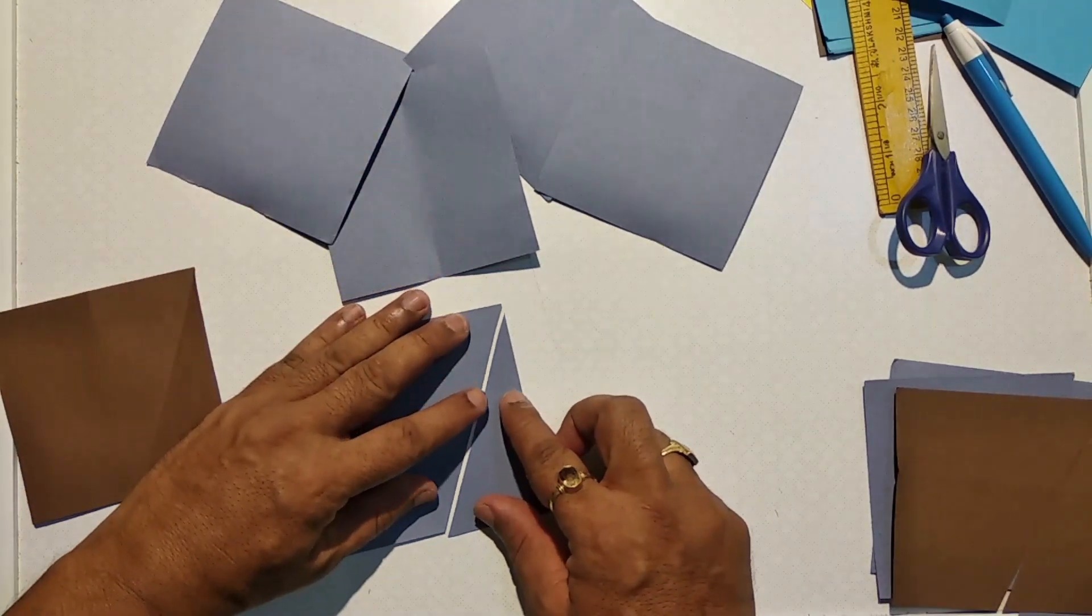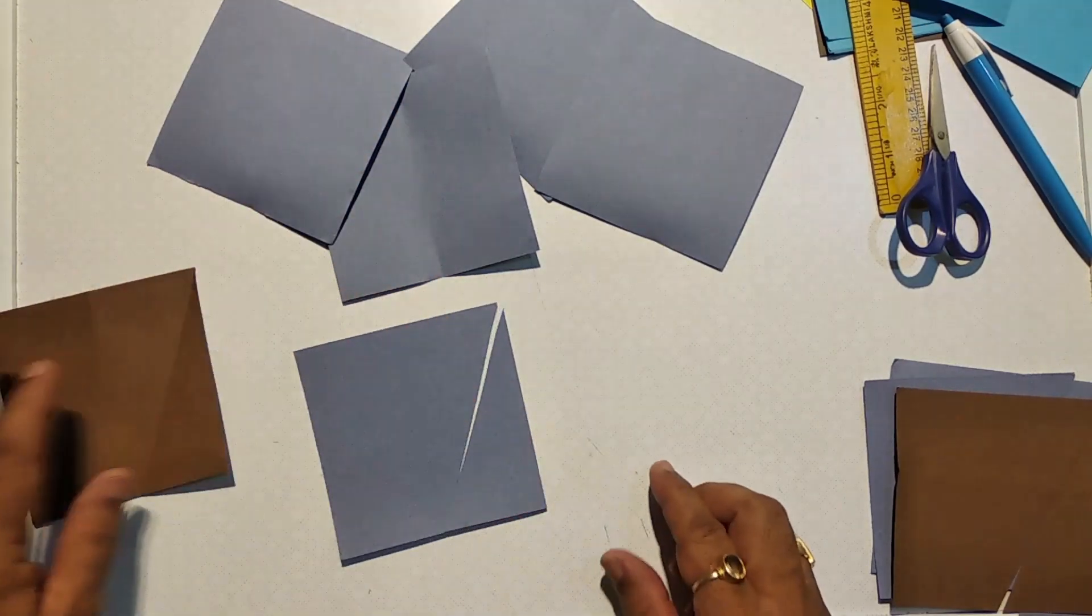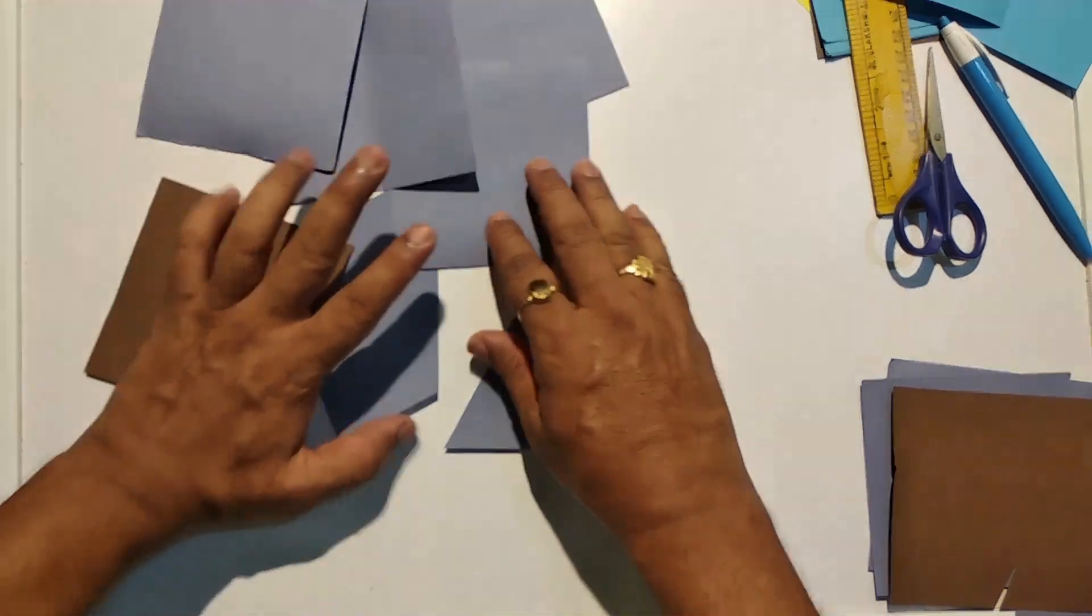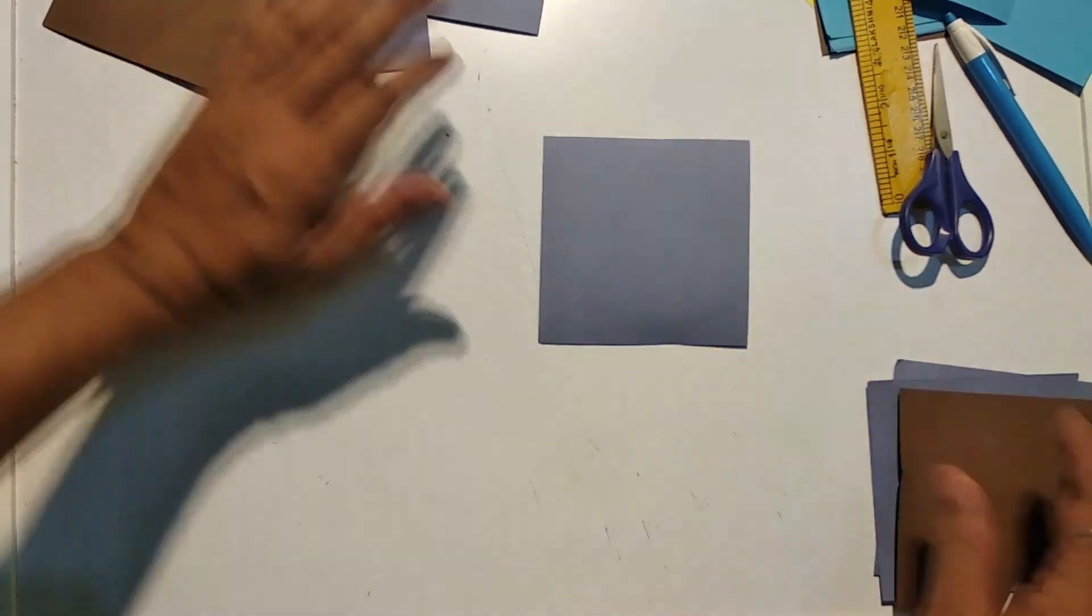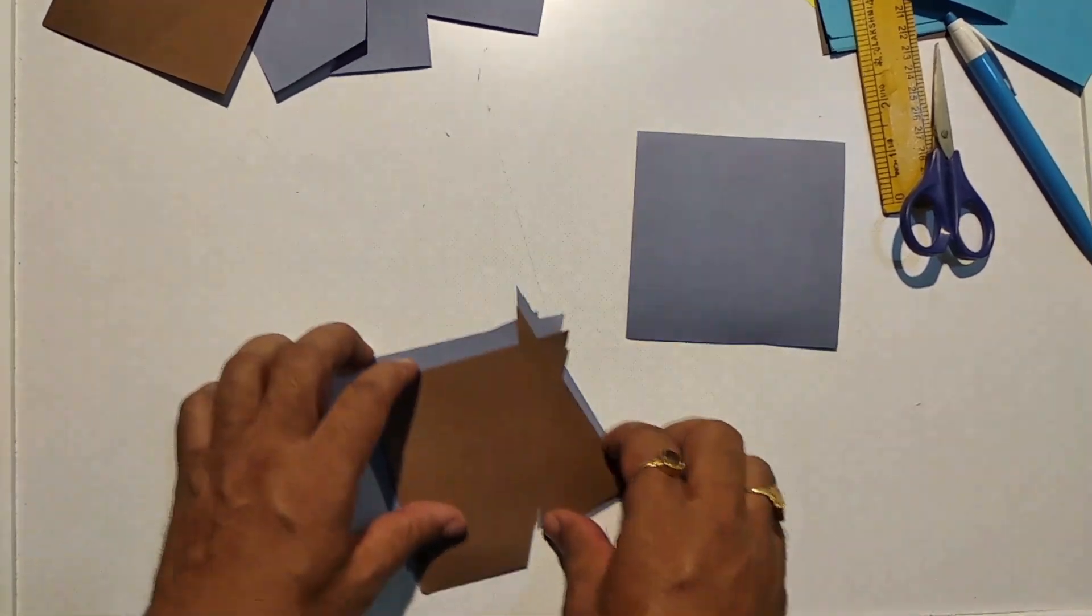This is how each square will look. This is the center one. Then we have four more squares cut in this way.